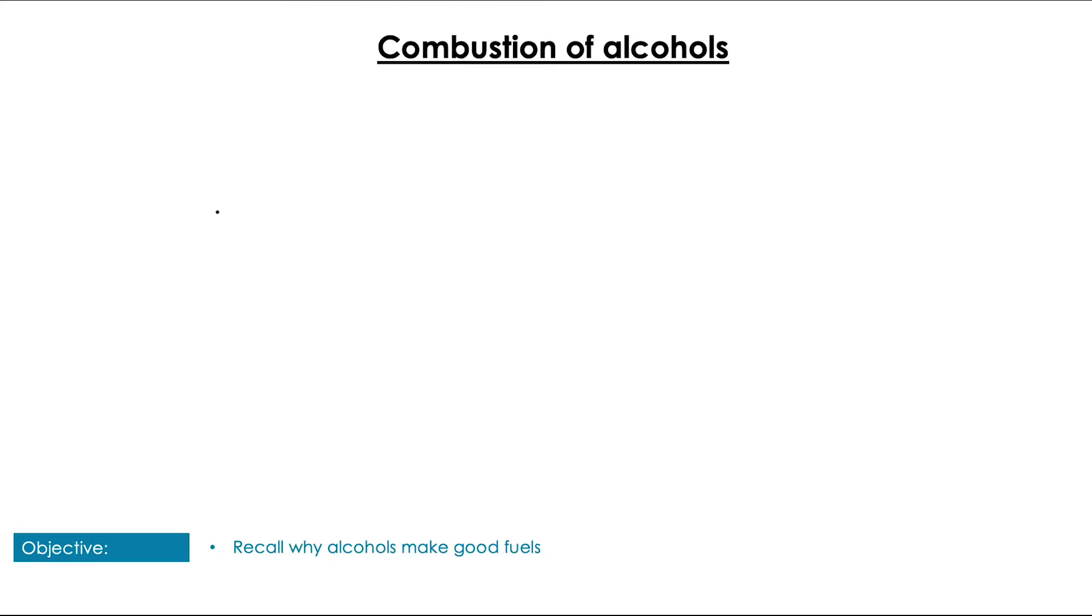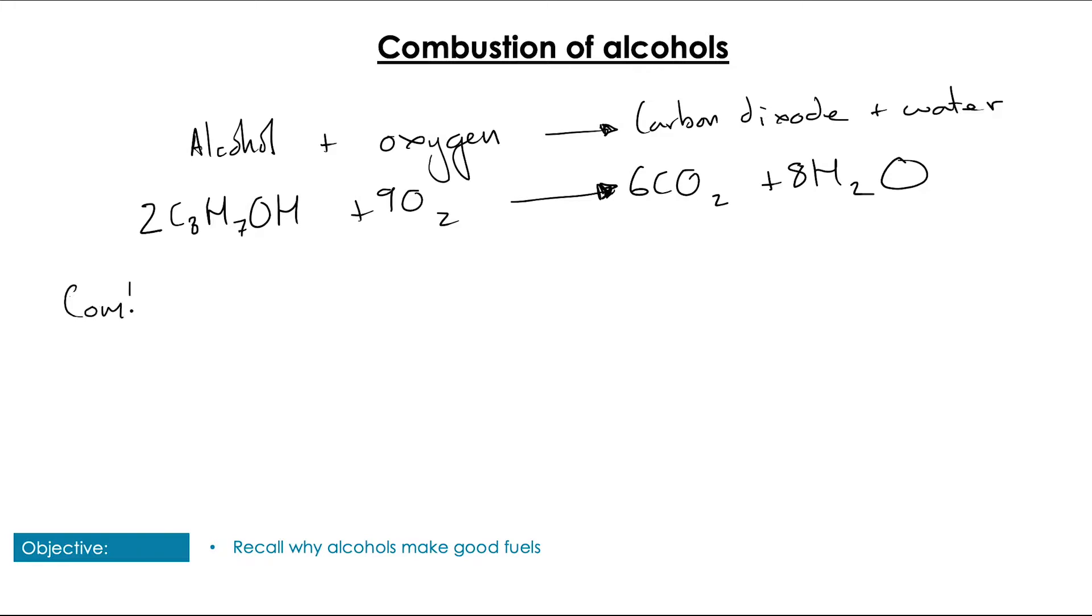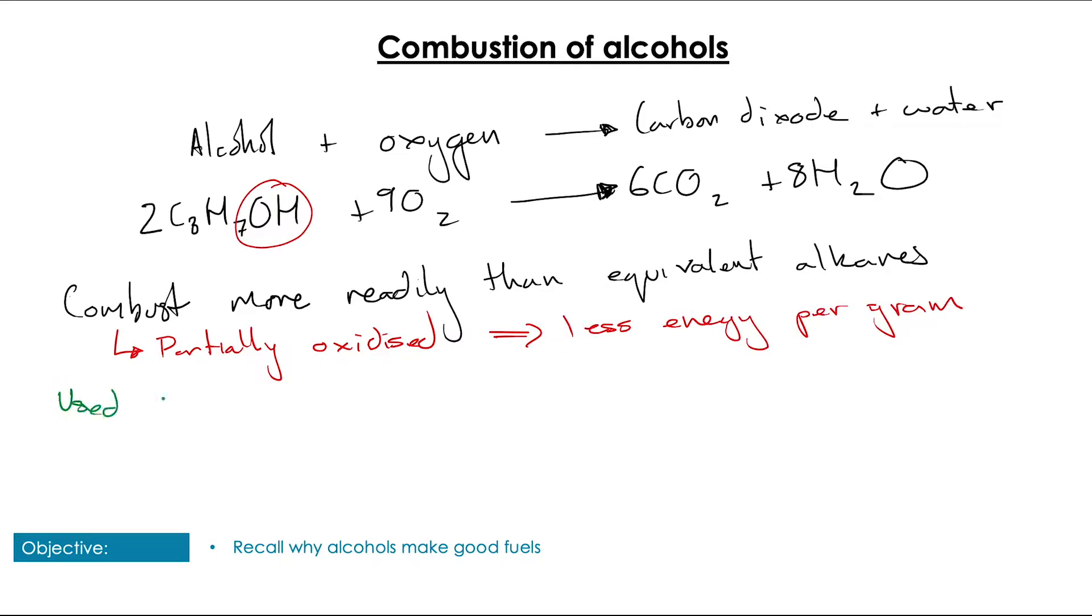When we're looking at alcohols, let's first deal with the most simple of these reactions, which is good old-fashioned combustion. On the surface, we're still producing the same things as when we combusted the alkenes or alkanes - carbon dioxide and water. However, because of the higher proportion of oxygen present in the molecule, these are very readily combustible. We need less oxygen to combust them compared to alkanes. However, because they are already partially oxidized, they contain less energy per gram than the analogous alkane.